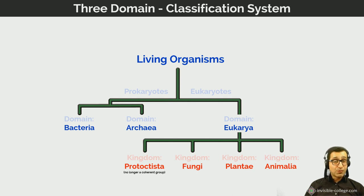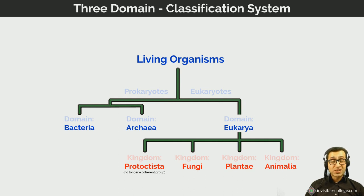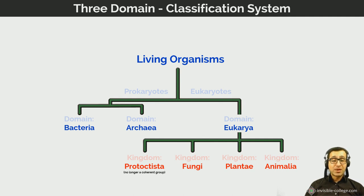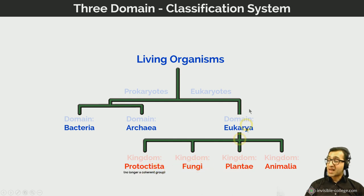You could take all the laboratories, scientists, resources, and money in the world and ask them to make a bacterium from scratch from raw materials, and they simply couldn't do it — it's way too complex. Given that biology deals with the most complex systems human beings have ever encountered, it's even more important that we classify organisms into groups so that we can better talk about and understand them.